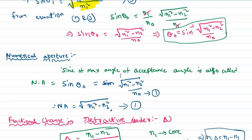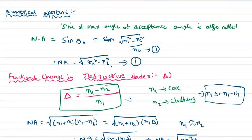The sine of the maximum acceptance angle is also called the numerical aperture. The formula for the numerical aperture is the square root of n1 squared minus n2 squared.